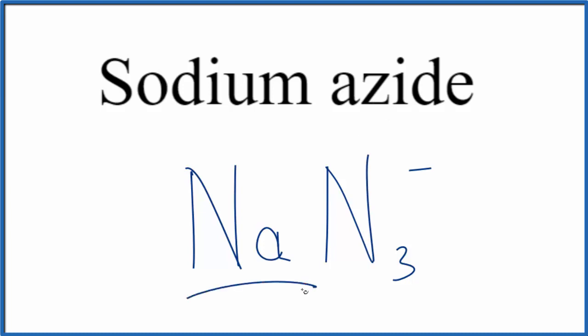Since we have this metal, sodium, and then we have this group of nonmetals here, we have metal and nonmetals. That's going to be an ionic compound, and we have to consider the charge. So sodium is in group 1 on the periodic table. It'll have a 1 plus ionic charge. We said the whole azide ion here, that'll be 1 minus.